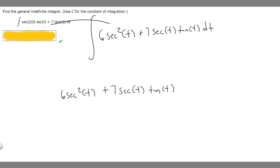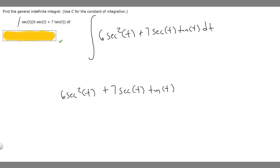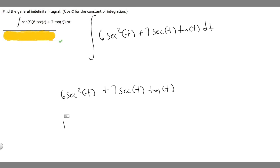Basically what we need to do is take the antiderivative of this. Let's start with the antiderivative of secant squared of t. We know that the derivative of tangent of t is equal to secant squared of t, so the antiderivative of secant squared of t is tangent of t. Multiplying by 6, that becomes 6 times the tangent of t plus...